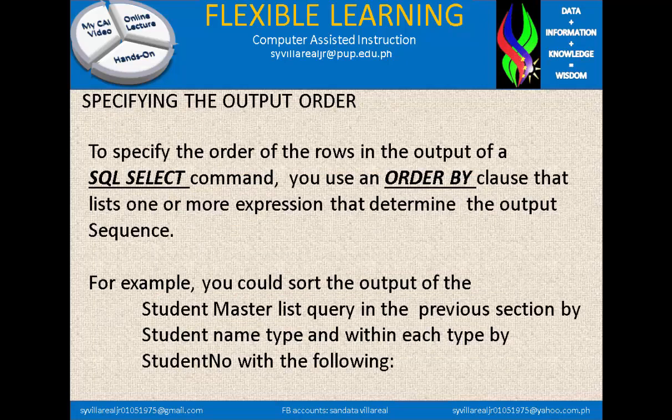To specify the order of the rows in the output of a SQL SELECT command, you use an ORDER BY clause that lists one or more expressions that determine the output sequence. For example, you could sort the output of the student master list query in the previous section by student name type, and within each type by student number.